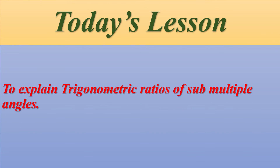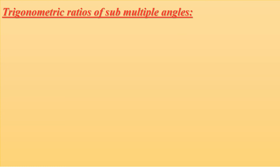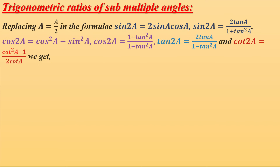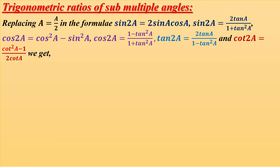Today's lesson is to explain trigonometric ratios of sub-multiple angles. Replacing A with A/2 in the formulas: sin2A = 2sinA cosA; sin2A = 2tanA/(1+tan²A); cos2A = cos²A - sin²A; cos2A = (1-tan²A)/(1+tan²A); tan2A = 2tanA/(1-tan²A); cot2A = (cot²A - 1)/(2cotA).